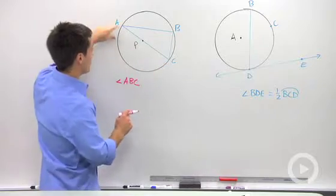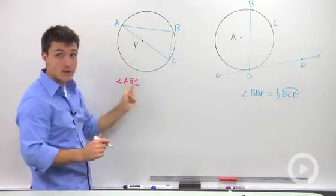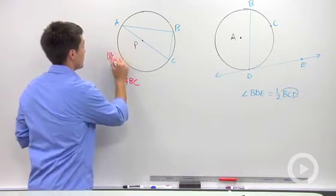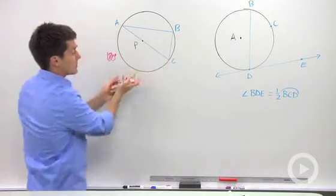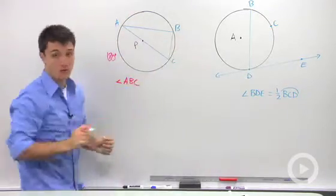So the intercepted arc here between A and C is 180 degrees because I know that half the circle is going to be over here and half the circle is going to be over here.